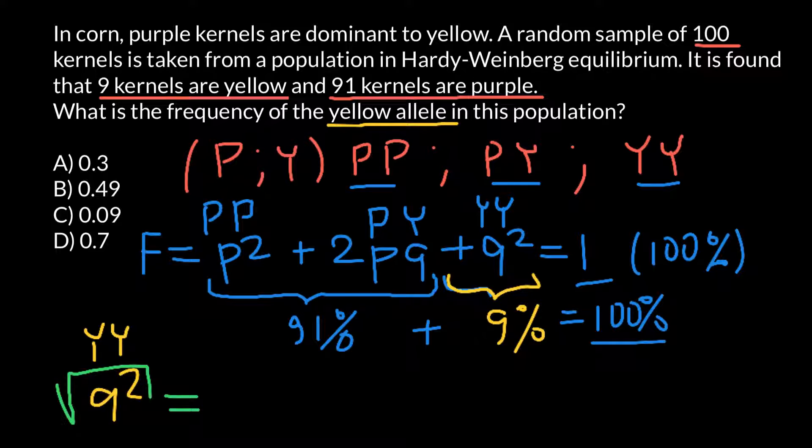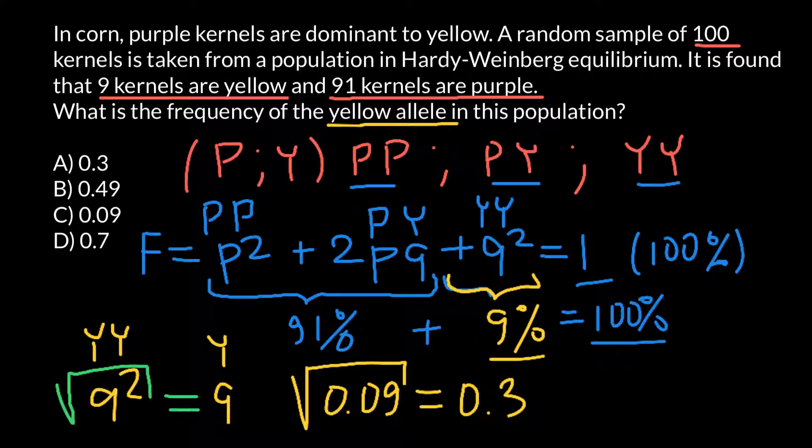And we are going to get Q, or Q equals Y. Now let's use numbers. So 9% would be 0.09, and we have to take a square root of this number. And we are going to get 0.3, and this would equal to frequency of the Y allele.